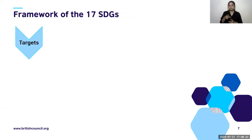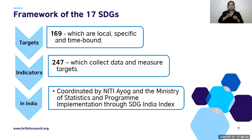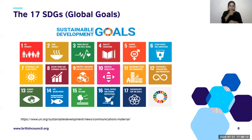The framework of the 17 SDGs is up on your screen. There are 169 targets which are very local, specific, and time-bound, and 247 indicators which collect data and measure these targets. In India, this is coordinated by NITI Aayog and the Ministry of Statistics and Programme Implementation through the SDG India Index. The SDGs — also known as Global Goals — are represented on this iconic poster which many of you might have already seen, featuring all 17 goals.